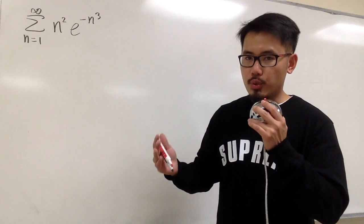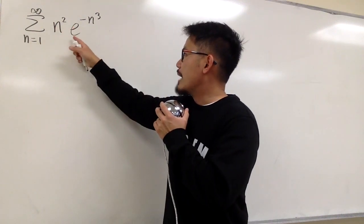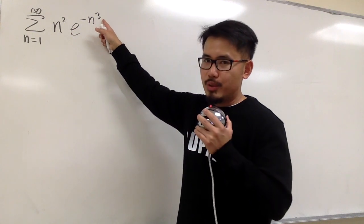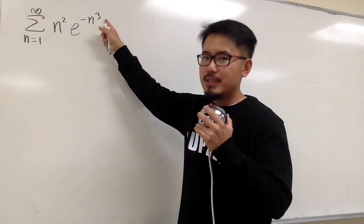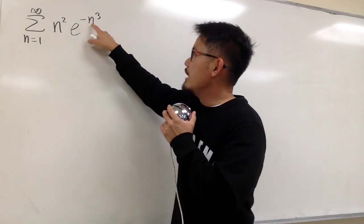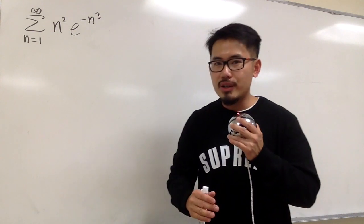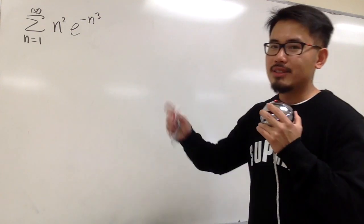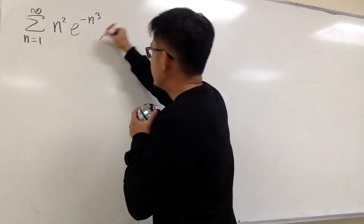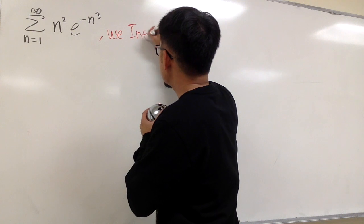Imagine if we were doing an integral — the integral of x squared times e to the negative x to the third power. Can we integrate that? Yes, we can, because the derivative of negative x to the third power is negative 3x squared, and the x squared terms will cancel. So in this case, let's attempt the integral test.